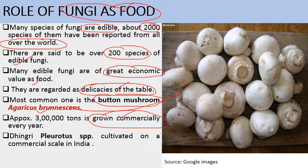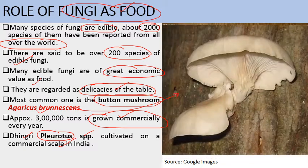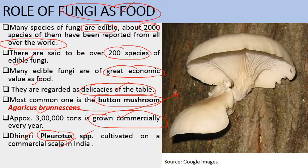Another species is Dhingry, botanical name Pleurotus. This Pleurotus species is cultivated on a commercial scale in India. Its consumption is a little bit lower compared to Agaricus brunescence because it is not a good-looking mushroom — it has an unattractive appearance — so it is not preferred as much, but it is also produced commercially in India.